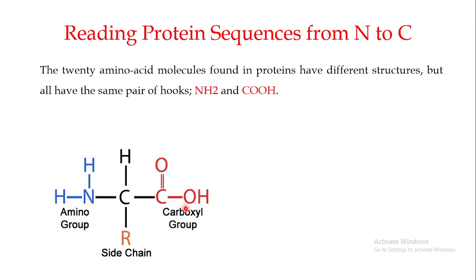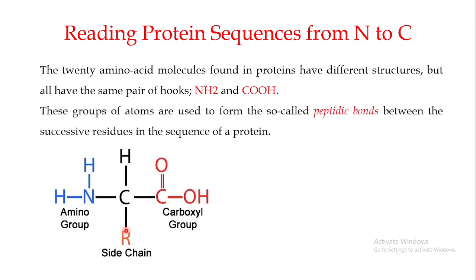When we say that the structures of amino acids are different from each other, what we mean is that they have a side chain, and the side chains are different in different amino acids, thereby making them different from each other. This group of atoms present in the amino acids is used to form the so-called peptide bond between successive residues in the sequence of a protein.